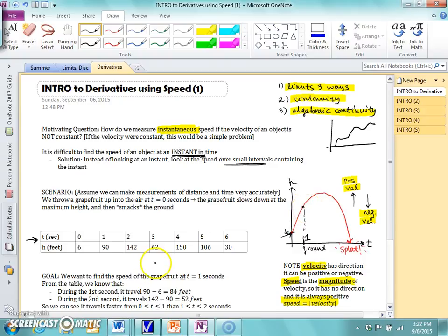Now from our table, we know that during the first second, from here to here, it travels 84 total feet, 90 minus 6. And during the second second, from 1 to 2 seconds, it travels 52 feet, 142 minus 90.